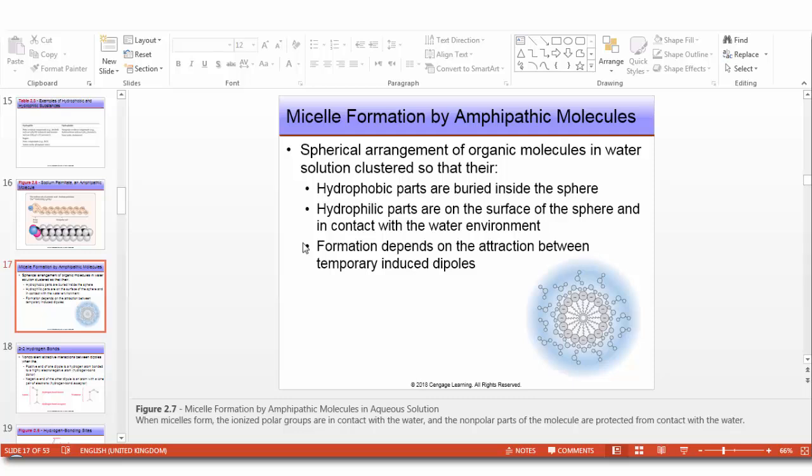So, a compound such as this in the presence of water tends to form a structure called micelles, in which the polar head groups are in contact with the aqueous environment. All the polar head groups are in contact with the aqueous environment, because like dissolves like, and the non-polar tails are buried in the middle, away from water. This is a spherical arrangement of organic molecules in water solution clustered, so that their hydrophobic parts are buried into the sphere, and hydrophilic parts are exposed to the water or aqueous environment. Formation depends on the attraction between temporary induced dipoles. This structure you see here is called a micelle.